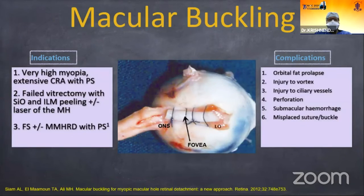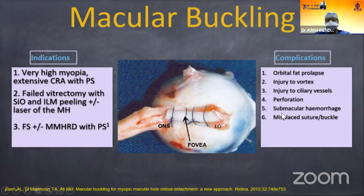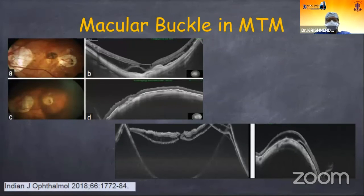Another option is macular buckling. The indication for macular buckle is very high myopia with extensive chorioretinal atrophy with posterior staphyloma and failed primary vitrectomy. If there is a posterior staphyloma making it very difficult to approach the posterior pole, we can opt for macular buckling. However, it carries significant complications including orbital fat prolapse, injury to the vortex vein, injury to the ciliary vessel, perforation, submacular hemorrhage, and possible misplacement in a different quadrant. It requires a certain degree of expertise and has a notable learning curve.